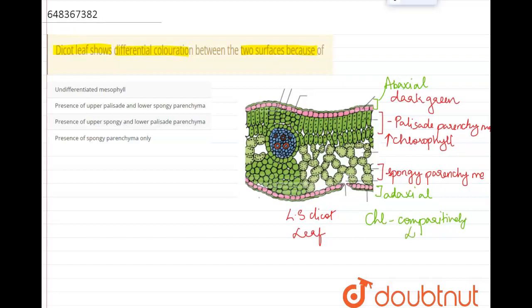Comparatively low. So hence, the adaxial side is going to resemble a color that is green, but it is sort of a light green color. And the abaxial side is darker green in color.